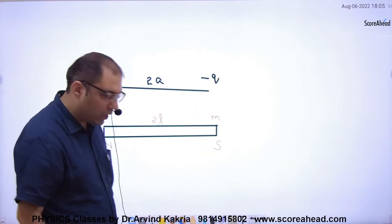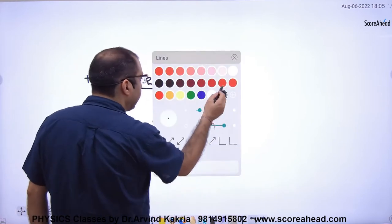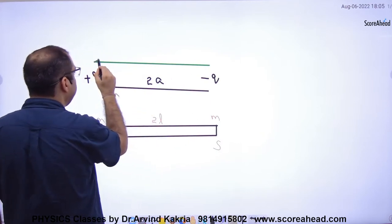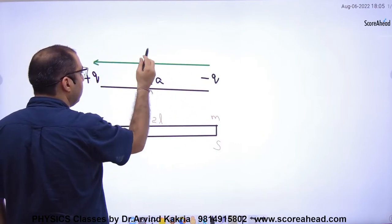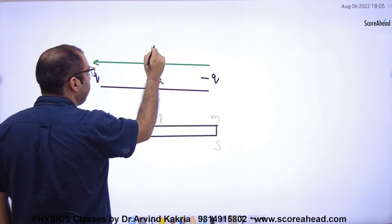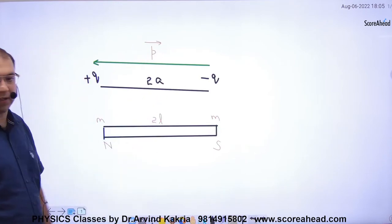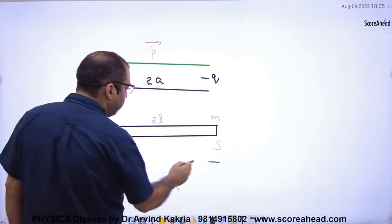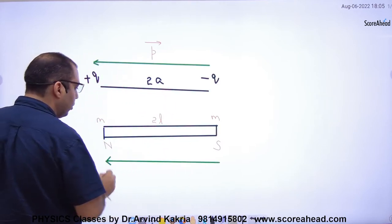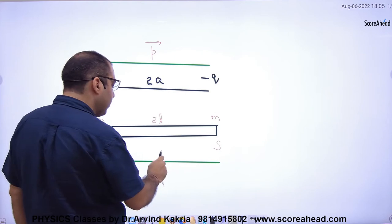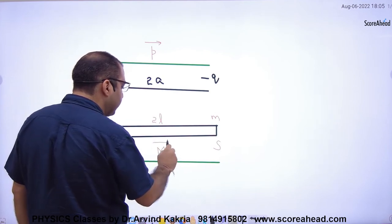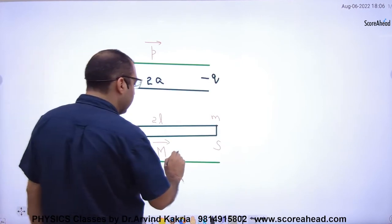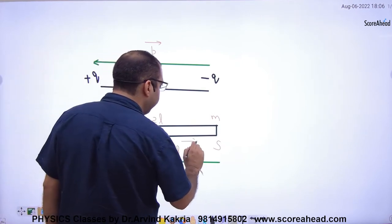Now, the magnetic dipole moment — what was the direction from negative to positive in the electric dipole? That represented the P-vector. Similarly, the magnetic dipole is represented from south to north. The magnetic dipole moment is represented by M-vector, or in some books by mu-vector.